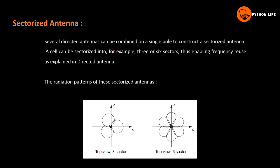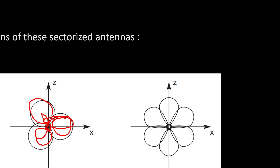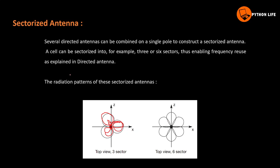Several directed antennas can be combined on a single pole to construct a sectorized antenna. With three directed antennas we have a triangle shape, forming a circle. With 6 sectors we have a hexagonal shape. This cell can be sectorized into, for example, 3 or 6 sectors, set in an antenna.